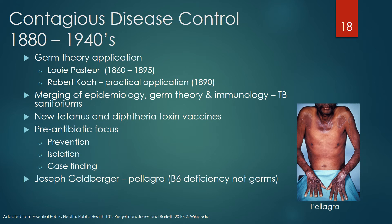3) Microorganisms from the pure culture are inoculated into a healthy, susceptible animal, and the disease is reproduced in that animal. 4) The identical microorganisms are isolated and recultivated from the tissue specimens of the experimental animal. This era also saw the merging of epidemiology, germ theory, and immunology, resulting in public programs to control infectious diseases like tuberculosis. Scientists could now identify tuberculosis by a skin test, culture, and chest x-ray. Many tuberculosis sanatoriums were developed. New toxin vaccines against tetanus and diphtheria were developed. Control of infectious diseases was the priority, with public health focusing on prevention, isolation, and case finding.